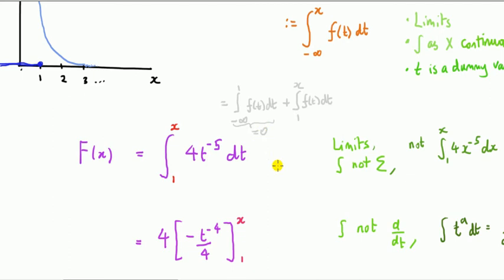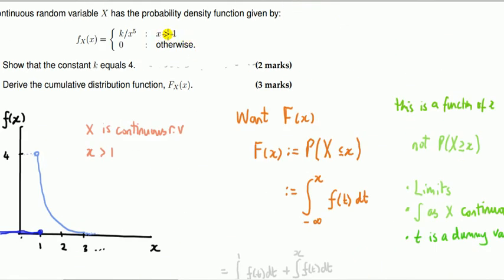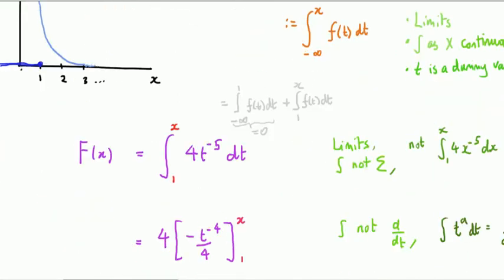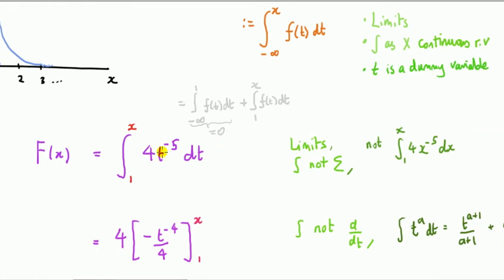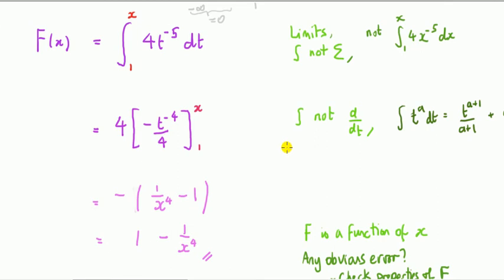We're computing the integral from one to x of k over t to the fifth dt. The upper limit is always x. The lower limit here is one, as you can see from the graph — that's why I drew the plot. Be careful to distinguish the dummy variable T from the evaluation point x. Do not write x in both places; that confuses the variable with the value at which you evaluate the function.